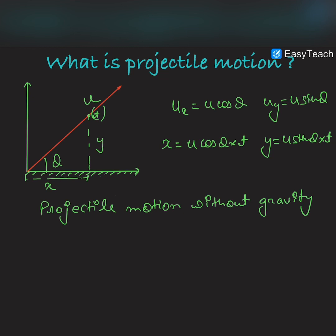Let us first imagine that we have a switch to control gravity, and we have switched off gravity initially. Without the effect of gravity and without the effect of air, we are projecting a stone with the velocity u. You can imagine that this stone will move along a straight line in the direction of the projection velocity, because there is no other force acting on the stone — hence its motion would be straight-line motion.